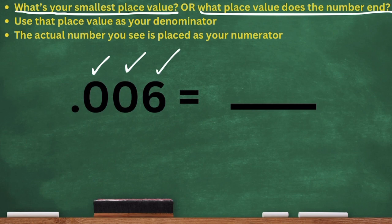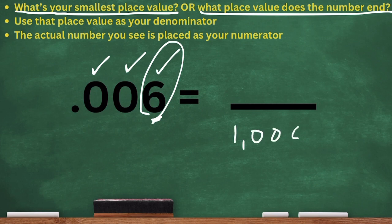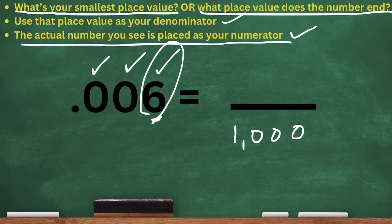The last digit is six, but we have to ask ourselves, what place value is that? That is in the thousandths place. If you need to refresh your memory on place value with decimals, I do have a video on that. So given that the six is in the thousandths place, that's why 1000 is my denominator.